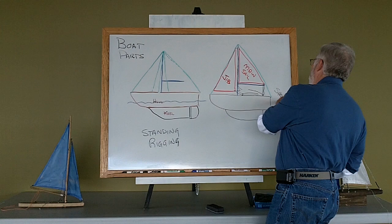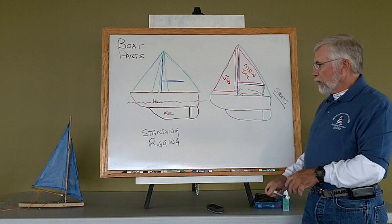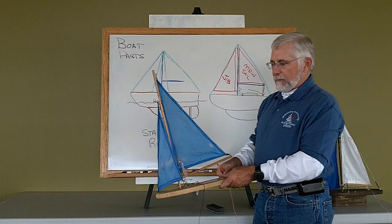When they attach to the jib, they're called jib sheets. And when they attach to the main, they're called main sheets. It's what I use to control the movement of the sail back and forth with my main sheet.